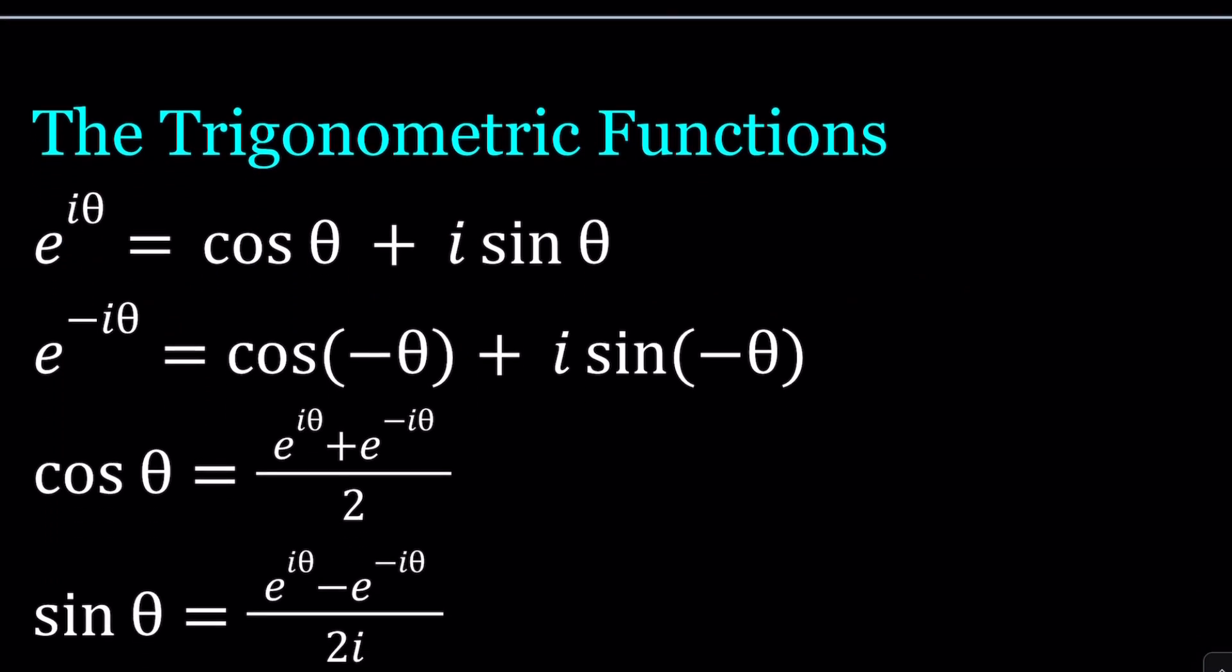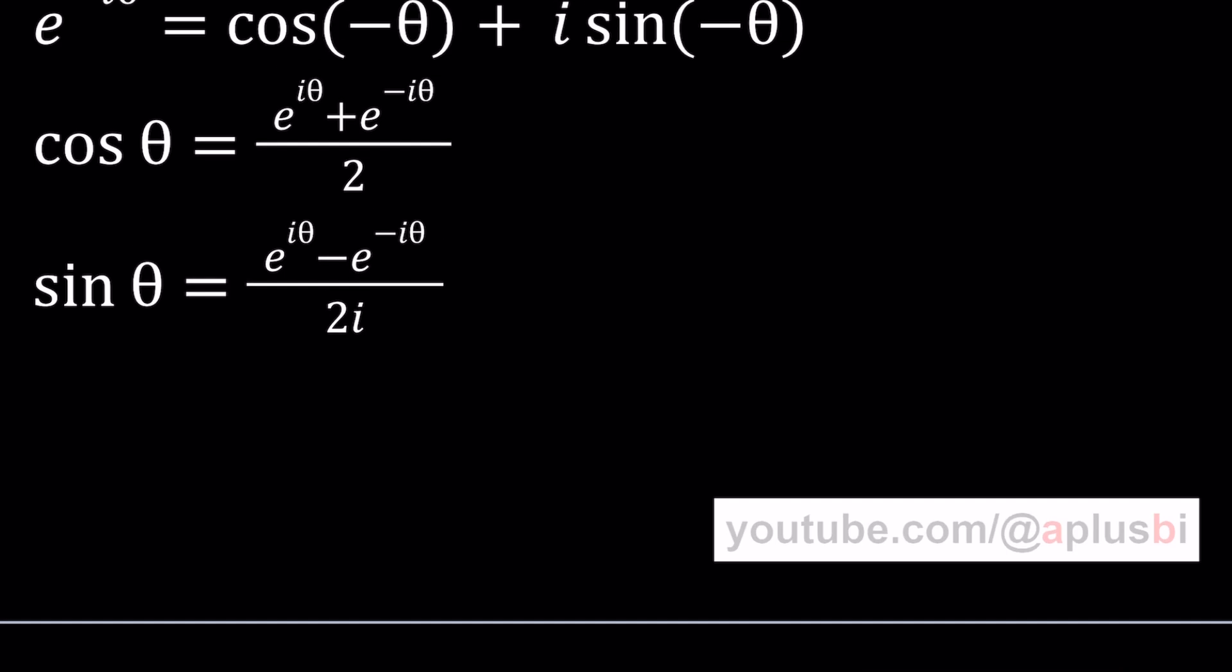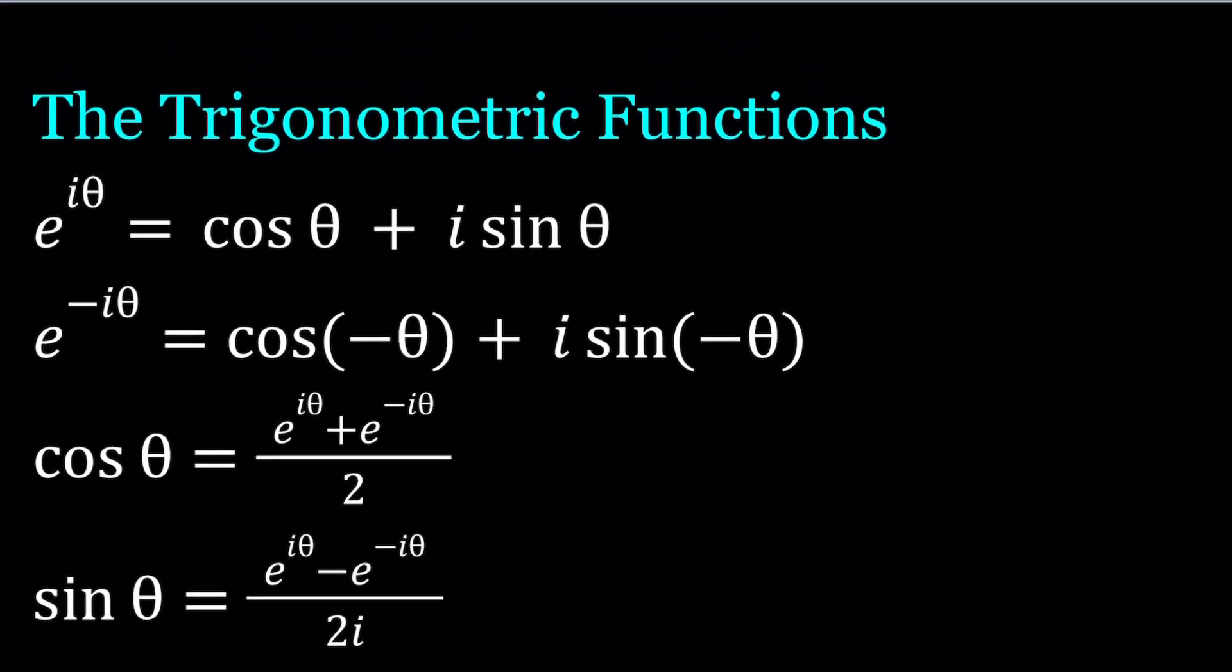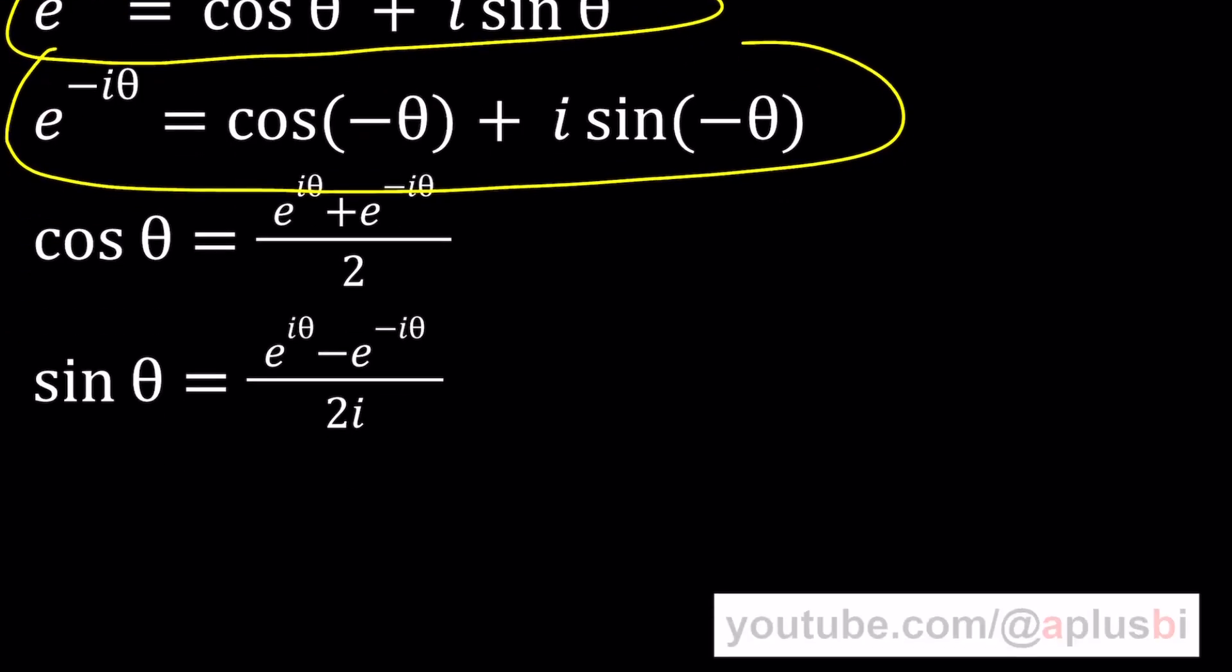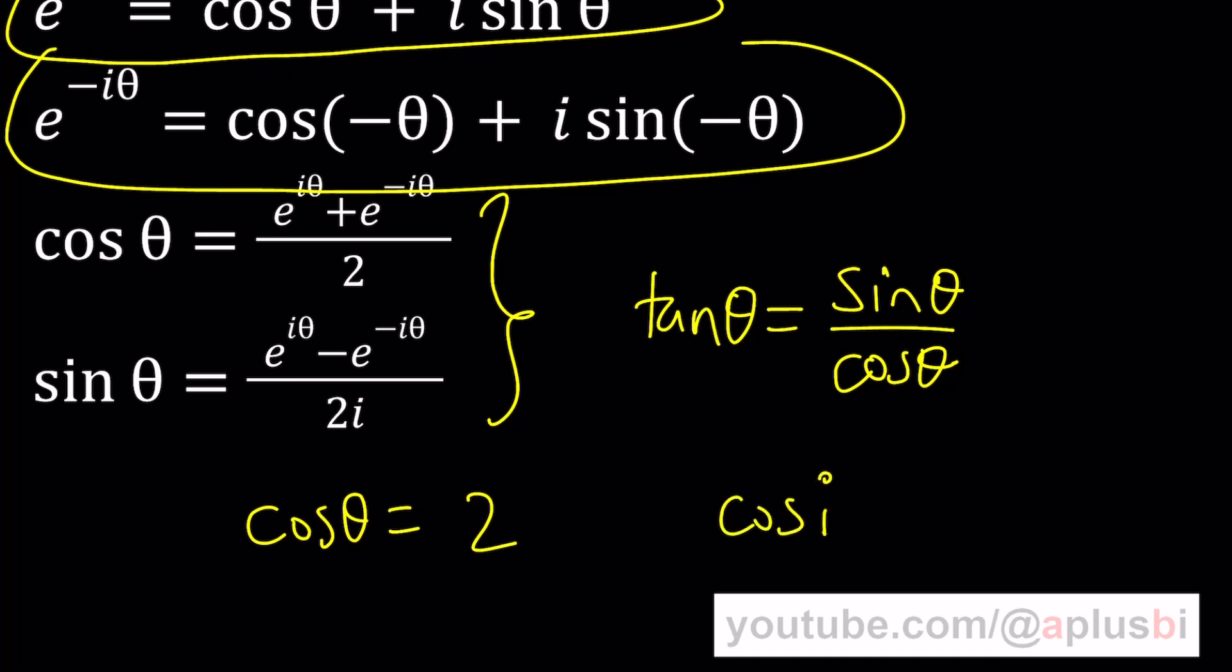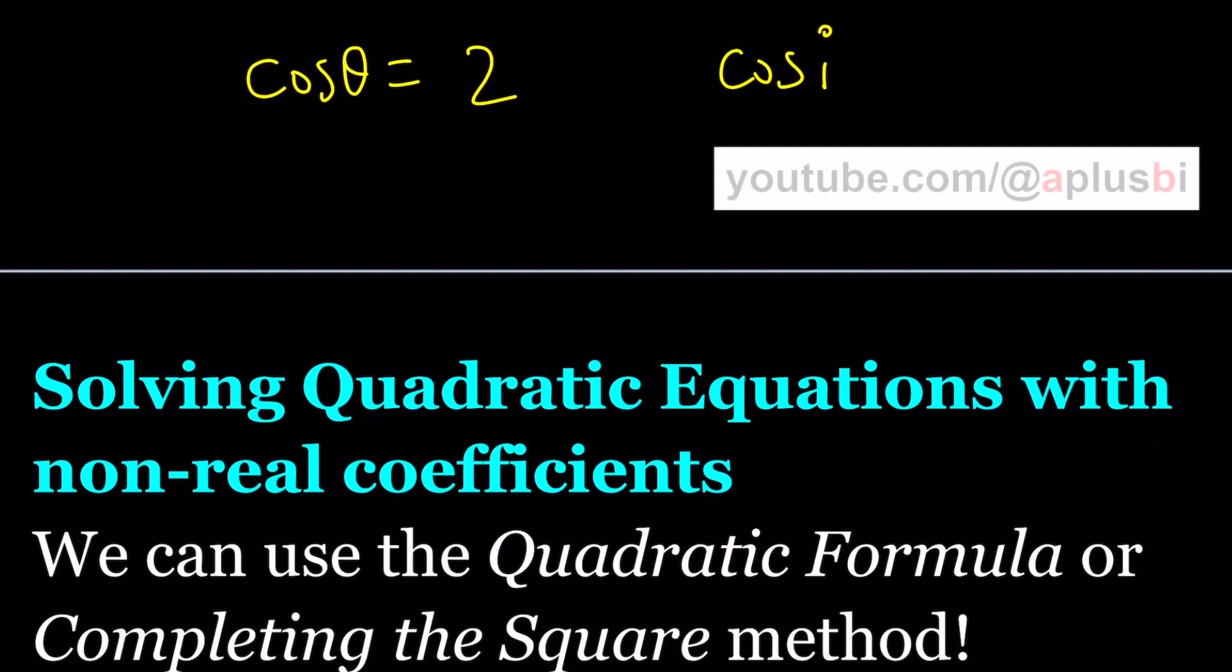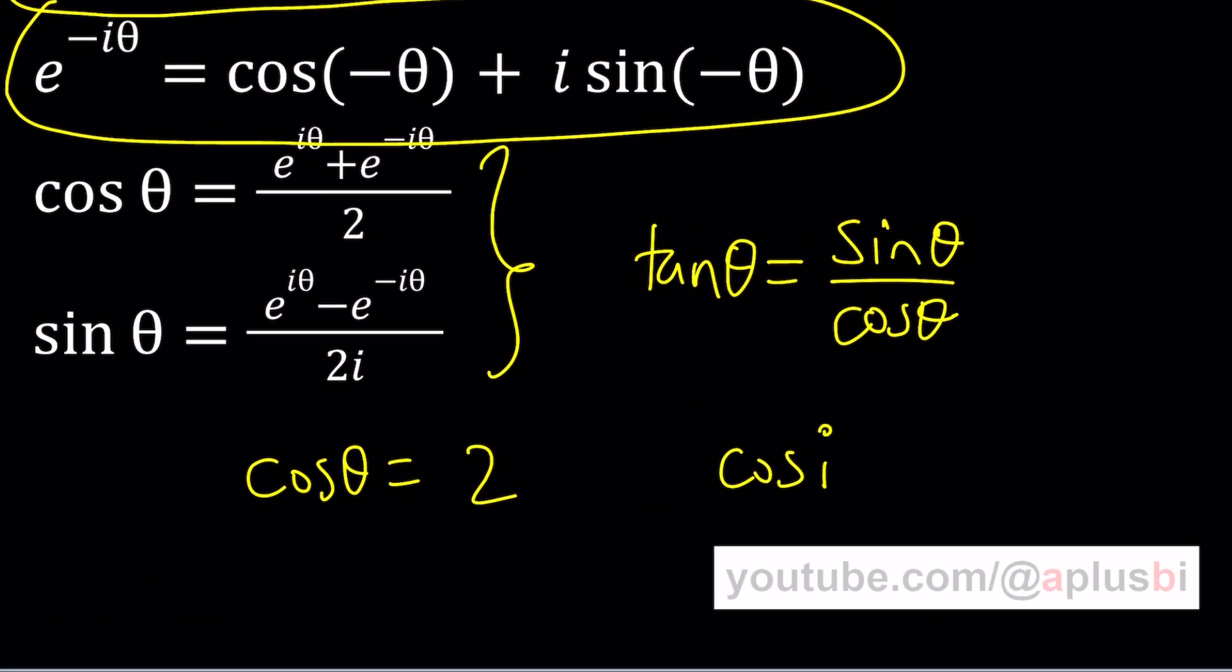The trigonometric functions are going to be the last piece in our lecture videos. Euler's formula allows us to write e to the i theta. Replacing theta with negative theta gives us the second formula, and then by adding and subtracting these together we get sine and cosine. This is helpful especially for solving equations like cosine theta equals 2 or to evaluate cosine i. These formulas come in very handy and you can also talk about the hyperbolic functions.